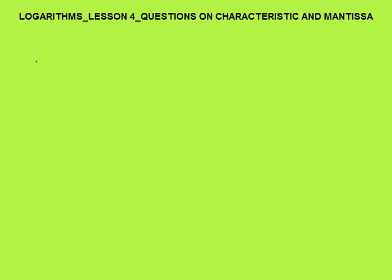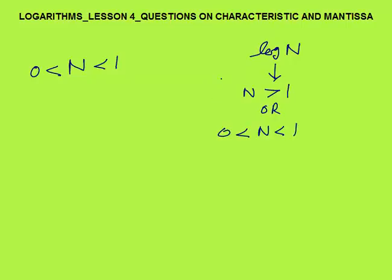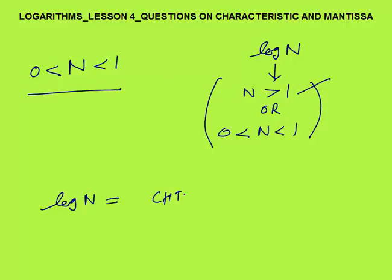Now let's discuss the case when n is between 0 and 1. I discussed the case where n > 1. Now n between 0 and 1: mantissa is still always a positive number lying between 0 and 1 — greater than 0 but less than 1, always positive.